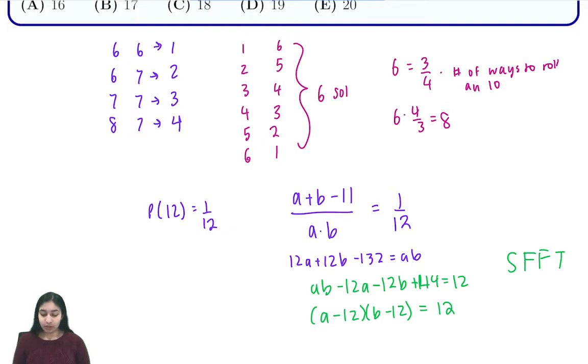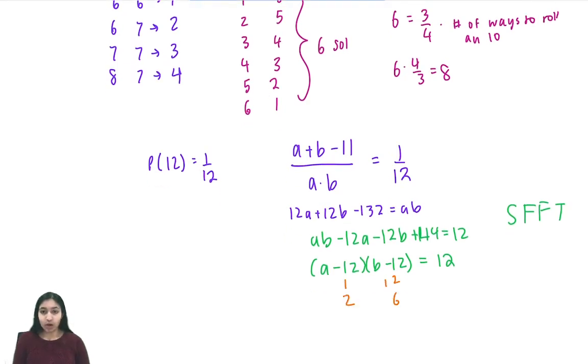So from here we want to look at solutions and of course we want a and b to be as close together as possible so that the sum of our dice is minimum. And note that we could try looking at cases such as one-twelve, two-six, and so on, but we don't actually want to do that in this case because we can have a and b, these expressions, be negative. So we could have negative two and negative six or negative three and negative four because a and b in these cases will still both be positive. So a and b are going to be the closest and the smallest when we have our first expression be negative three and our second expression be negative four. So if we have a minus 12 is negative three we have a equals nine and if b minus 12 equals negative four we have b equals eight.